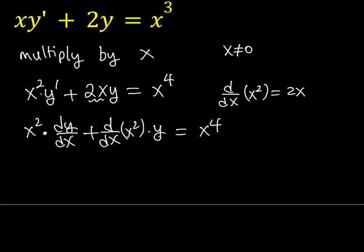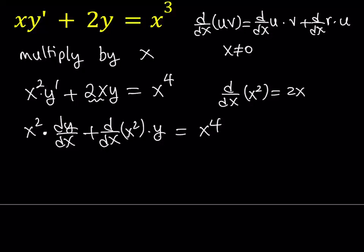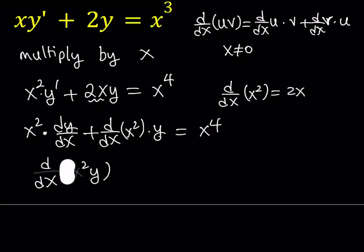If you think about the product rule, the derivative of the product of two functions u times v is the derivative of the first function times the second function, plus the derivative of the second function times the first function. So we kind of have that pattern here. This expression can be written as the derivative of x squared times y.